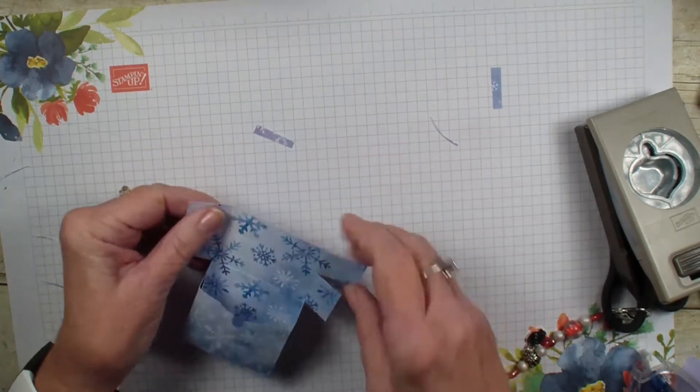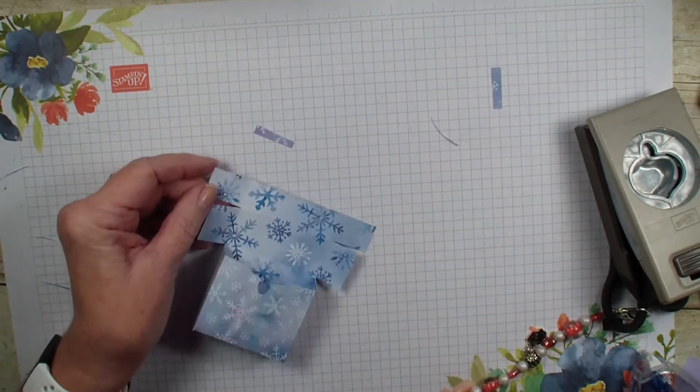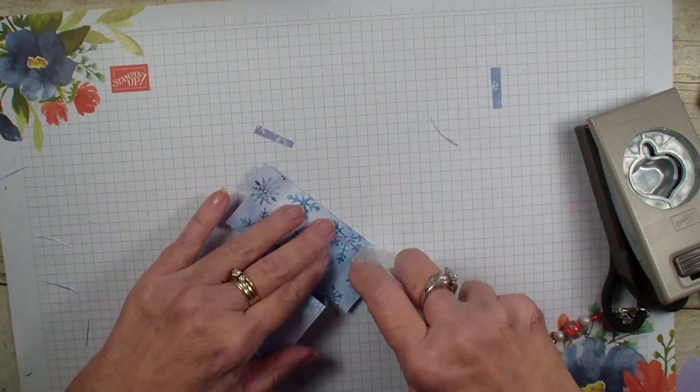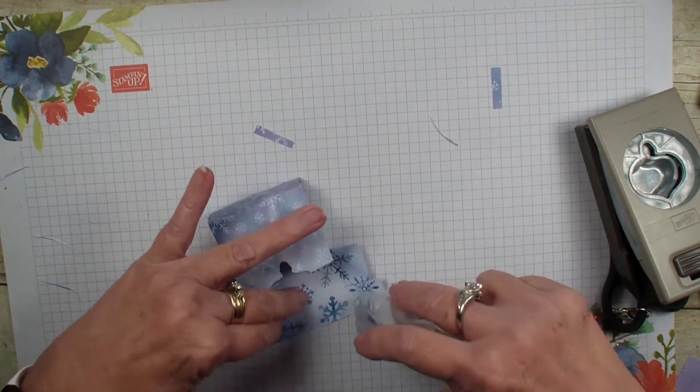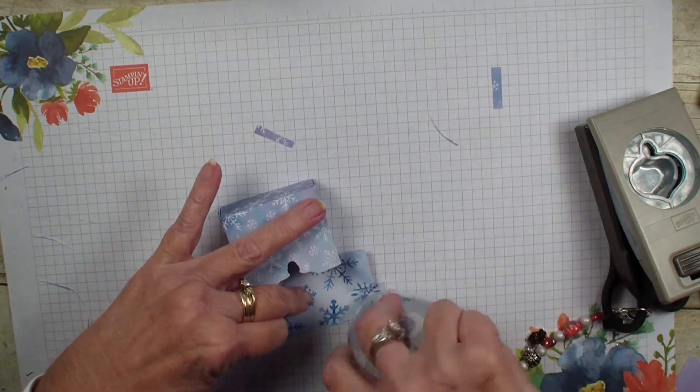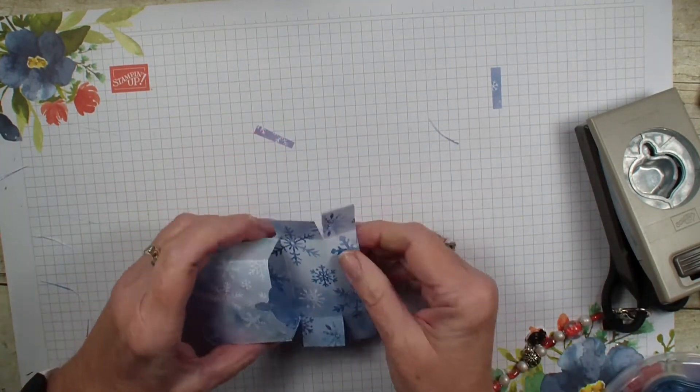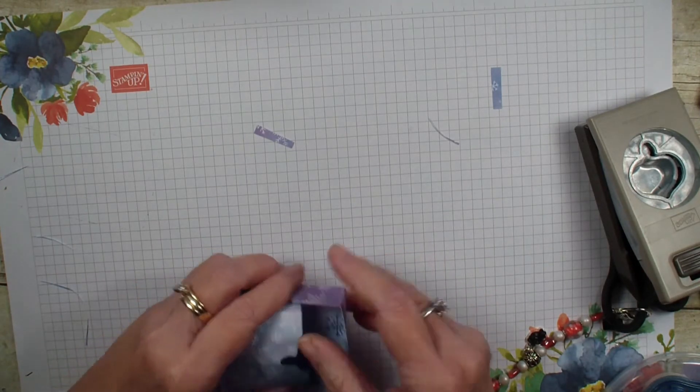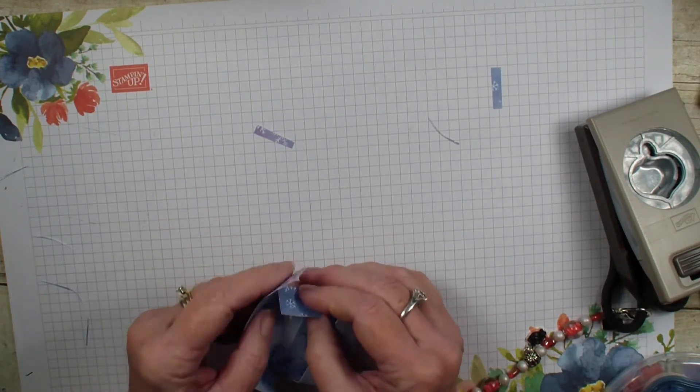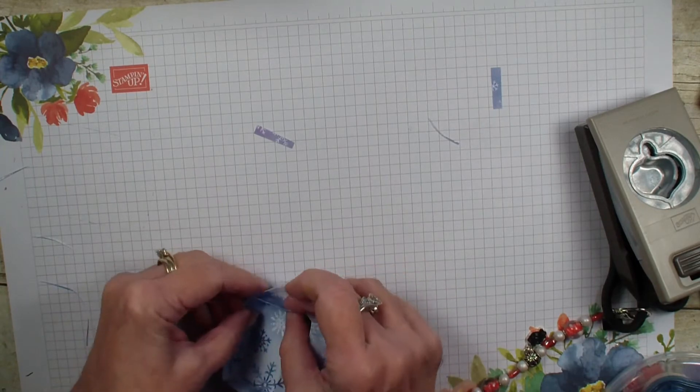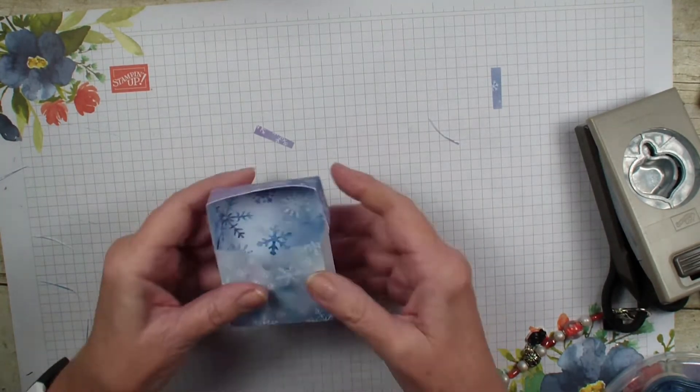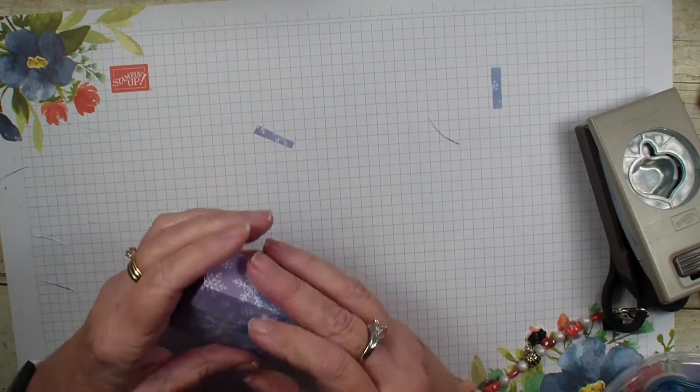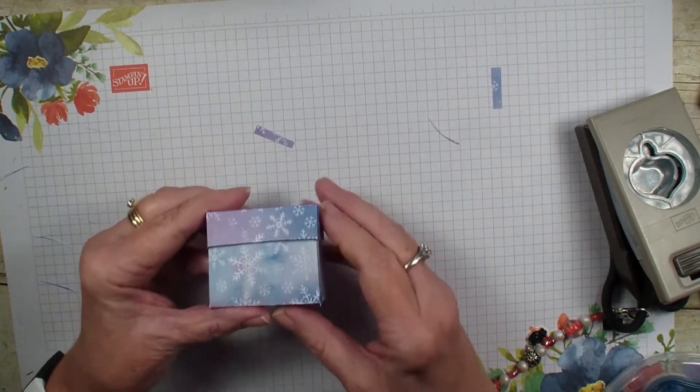Now on the short wings, we are going to tape that against the section that we cut out. We are going to just take this, tuck it in like so, and now we have our cute little box. Very easy.